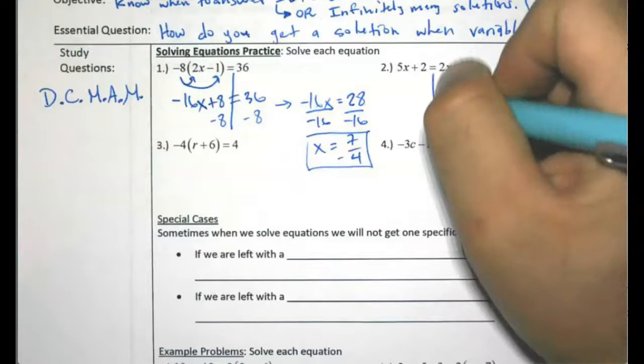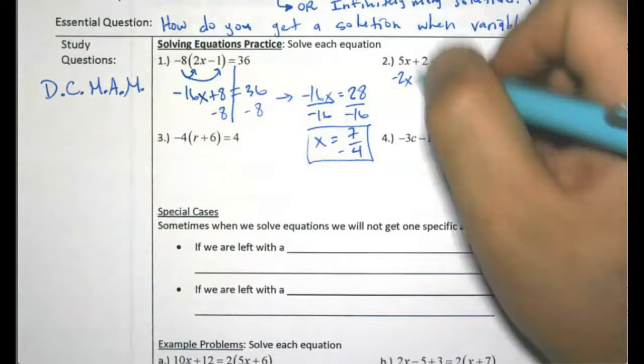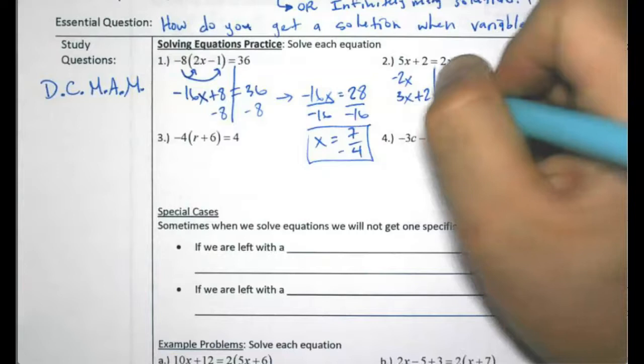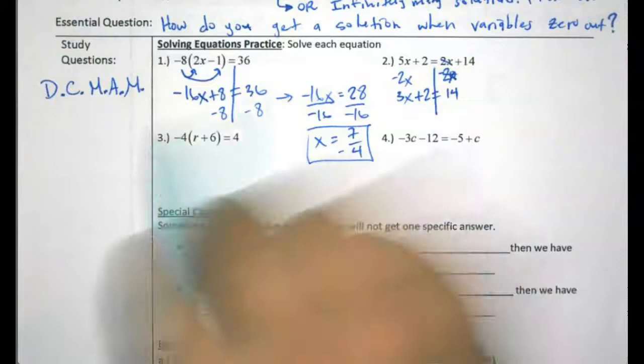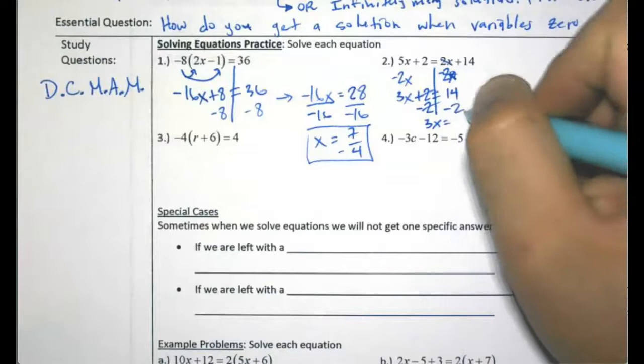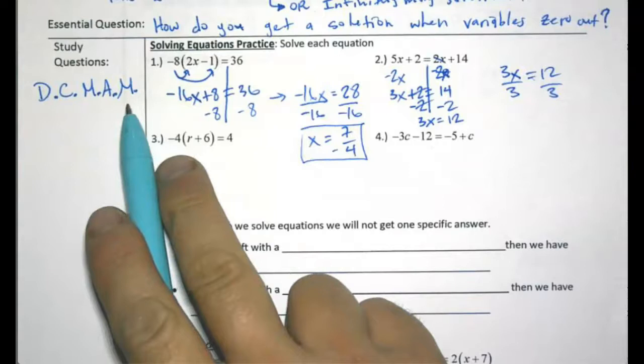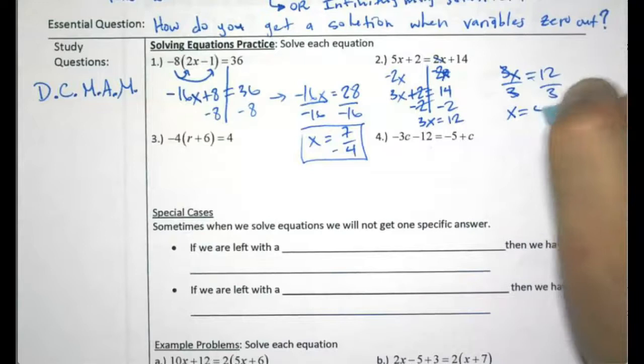Here, no distributing, no combining like terms. I move variables to the same side — there's a minus 2x, so I subtract 2x on both sides. 5 minus 2 is 3, giving me 3x, bring down the plus 2, the 2x's cancel, bring down the 14. Next step is adding or subtracting — I subtract 2 to get 3x by itself, and 3x equals 14 minus 2 is 12. Last step is to divide by 3: 12 divided by 3 equals 4, so x equals 4.